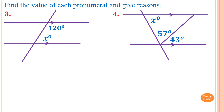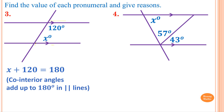Question three: this angle and this angle are both inside, so it is co-interior angles — like the letter C, both inside. Therefore X plus 120 equals 180, because co-interior angles add up to 180 degrees in parallel lines. To solve for X, minus 120 from both sides — 180 minus 120 is 60 — therefore X equals 60.